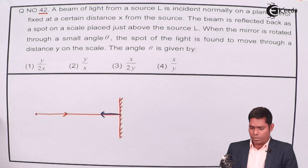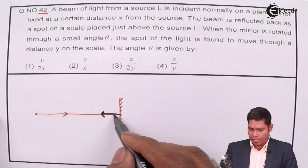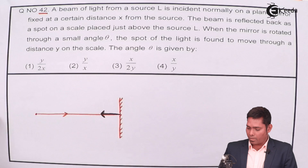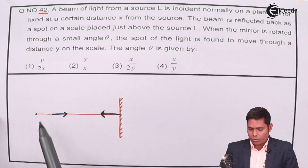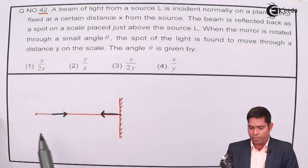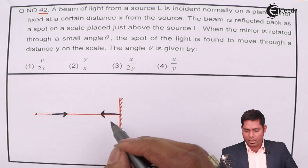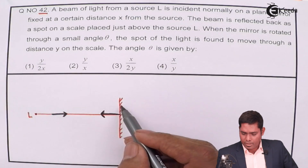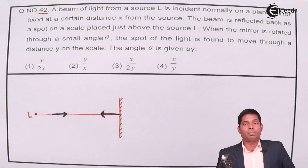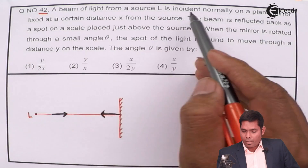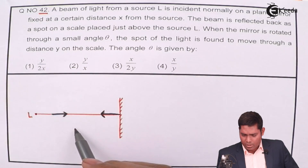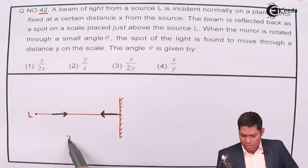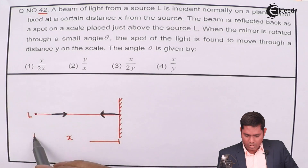Let me keep one color for the incident ray and make the incident and reflected rays the same color, so we have the idea of which is incident and which is reflected. This is the mirror, this is the source L, and the plane mirror is fixed at a distance x from the source — so from here to here, this distance is x.